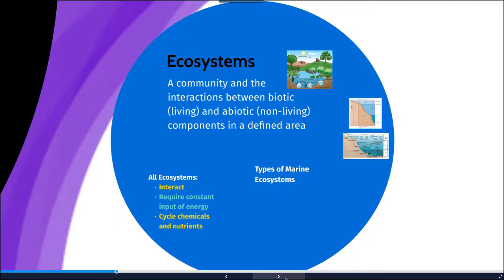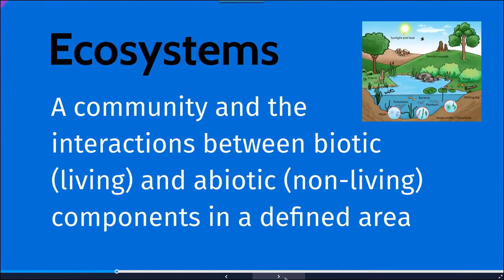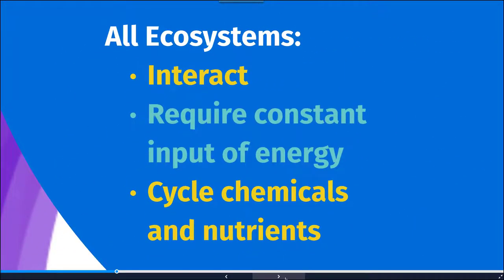Digging into the whole concept of an ecosystem: an ecosystem can be defined as a community and the interactions between the biotic, or living, elements and the abiotic, or non-living, factors in a defined or particular area. All ecosystems have an interaction between the abiotic and biotic components. They all require a constant input of energy, which is going to be largely fueled by the sun.